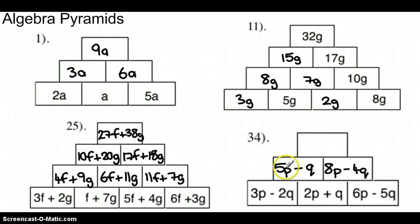And then at the top here, we've got 5p and 8p, which gives us a total of 13p. We've got minus q, and then another 4 negative q's. So all together we're going to have 5 negative q's, or minus 5q.